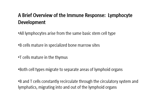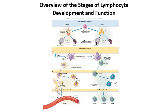After maturation, both of these cells are going to leave those respective areas and they're going to be circulating around — throughout your lymphatic system, in your bloodstream, in your spleen, and in your lymph nodes. Here's an overview image of what this lymphocyte development and differentiation looks like.